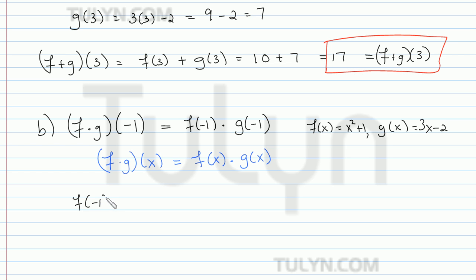So f of negative 1 is going to be negative 1 squared plus 1, which is just 1 plus 1, which is 2. And then g of negative 1. Same as above, you replace all the x's you see with negative 1's. So this is 3 times negative 1 minus 2. So it's negative 3 minus 2, which gives us negative 5.